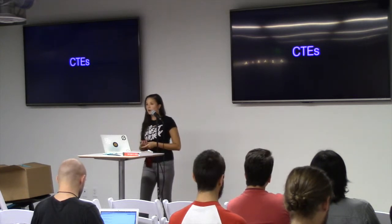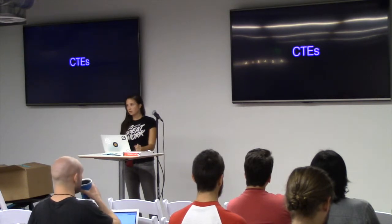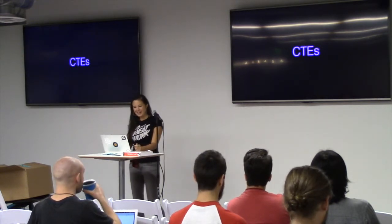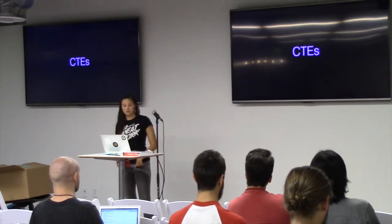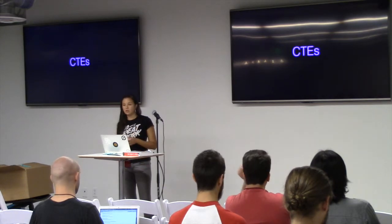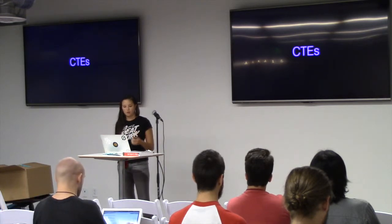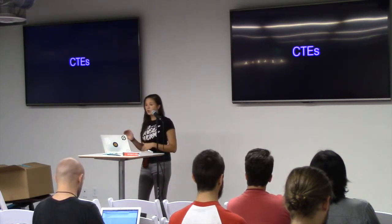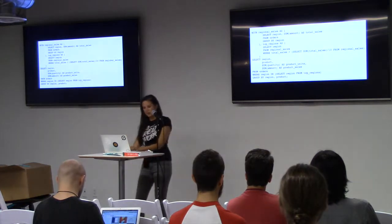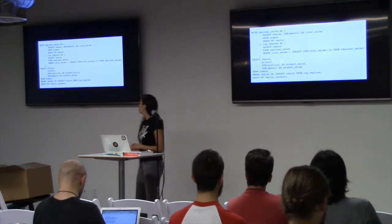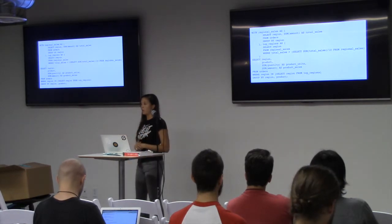Another thing that we like to use a lot are CTEs, or common table expressions. I think this is something really cool in Postgres — you definitely don't have access to this in Active Record. You can create something similar to a database view, but it only exists during the current transaction. This is a really handy thing if you have a super complex SQL query that seems overwhelming to manage.